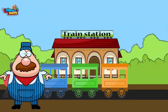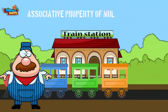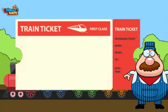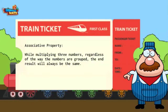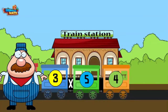One last stop here at the train station of multiplication properties. Today's lesson is about the associative property of multiplication. The associative property of multiplication states that while multiplying three numbers, regardless of the way the numbers are grouped, the end result will always be the same.